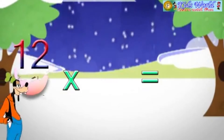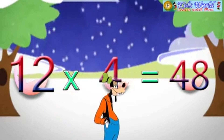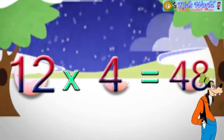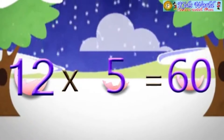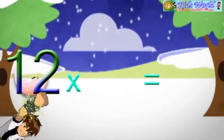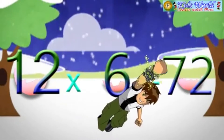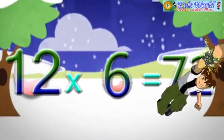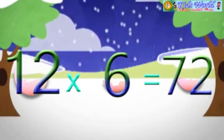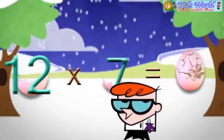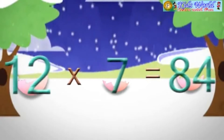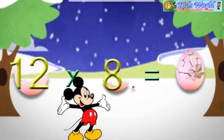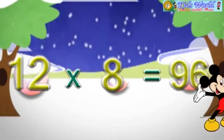12 into 4 is equal to 48. 12 into 5 is equal to 60. 12 into 6 is equal to 72. 12 into 7 is equal to 84. 12 into 8 is equal to 96.